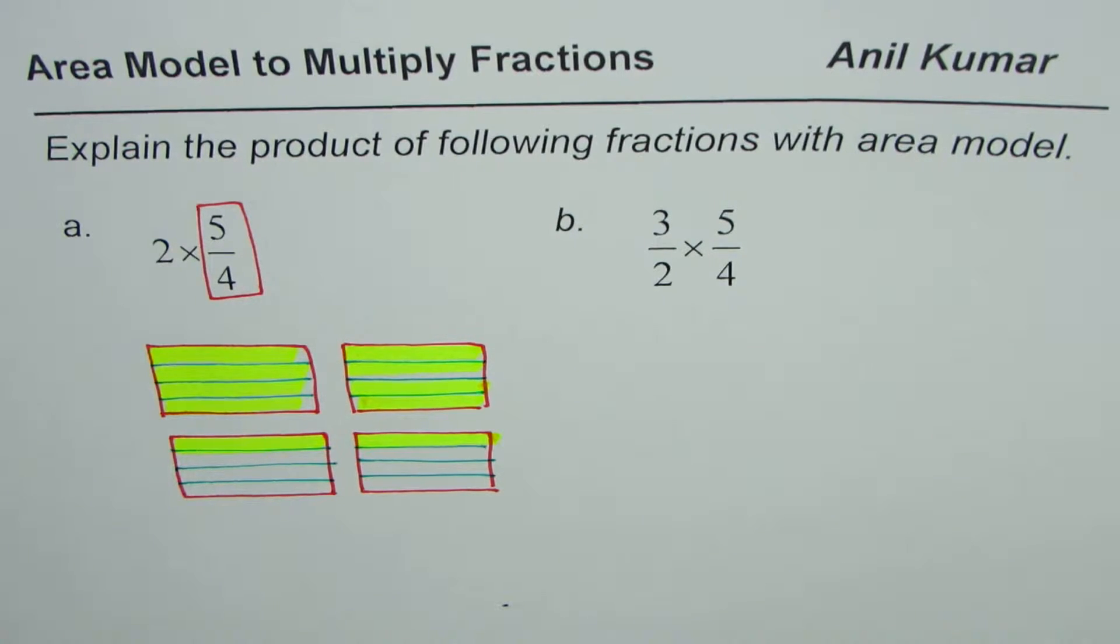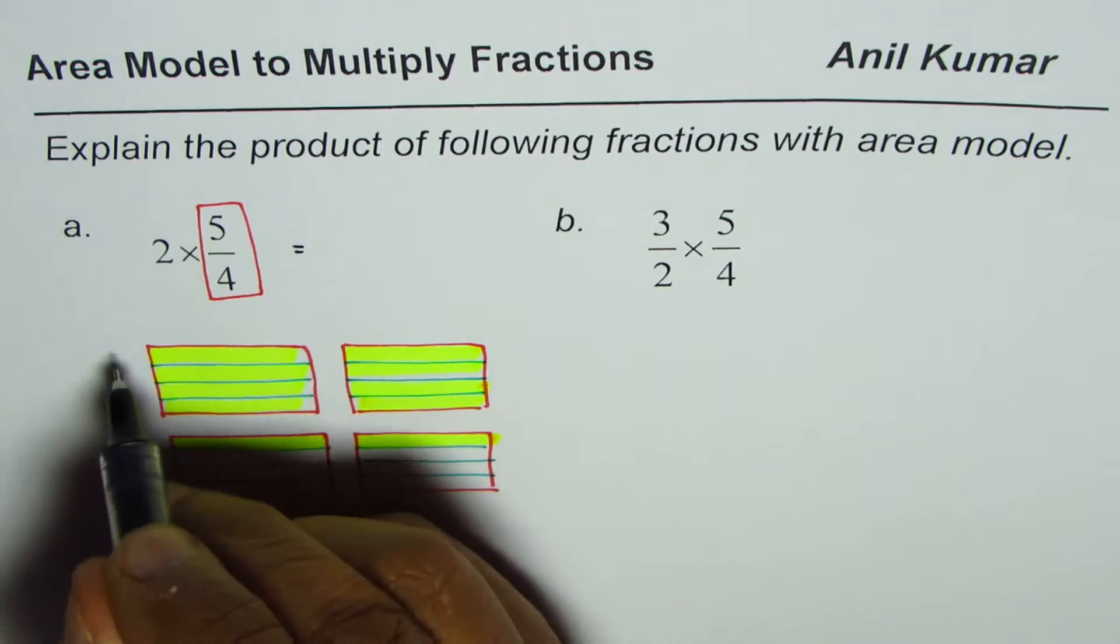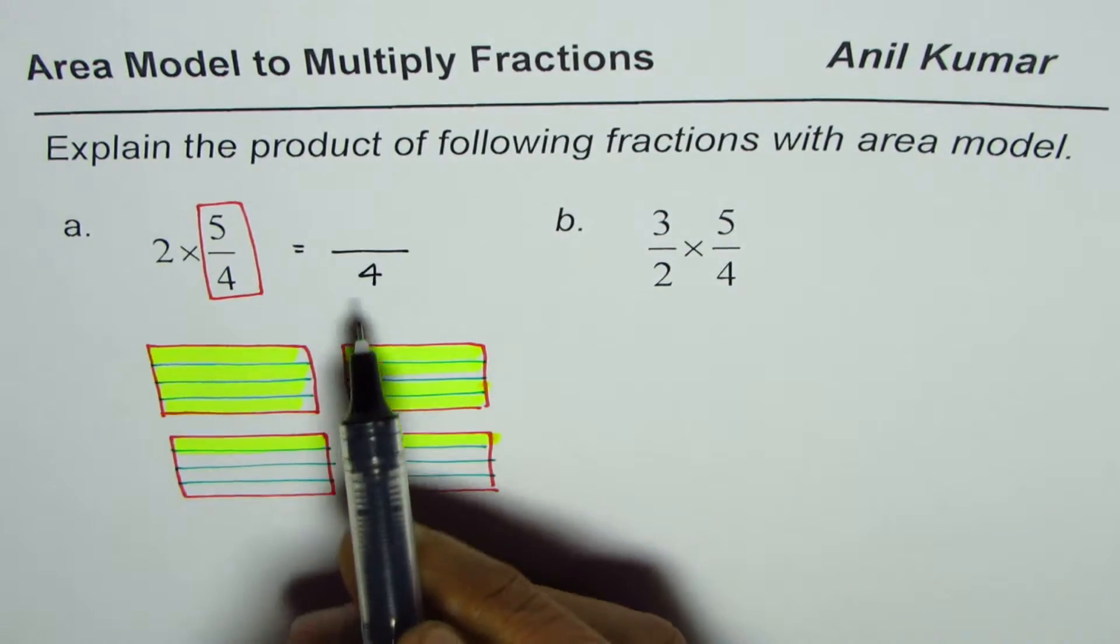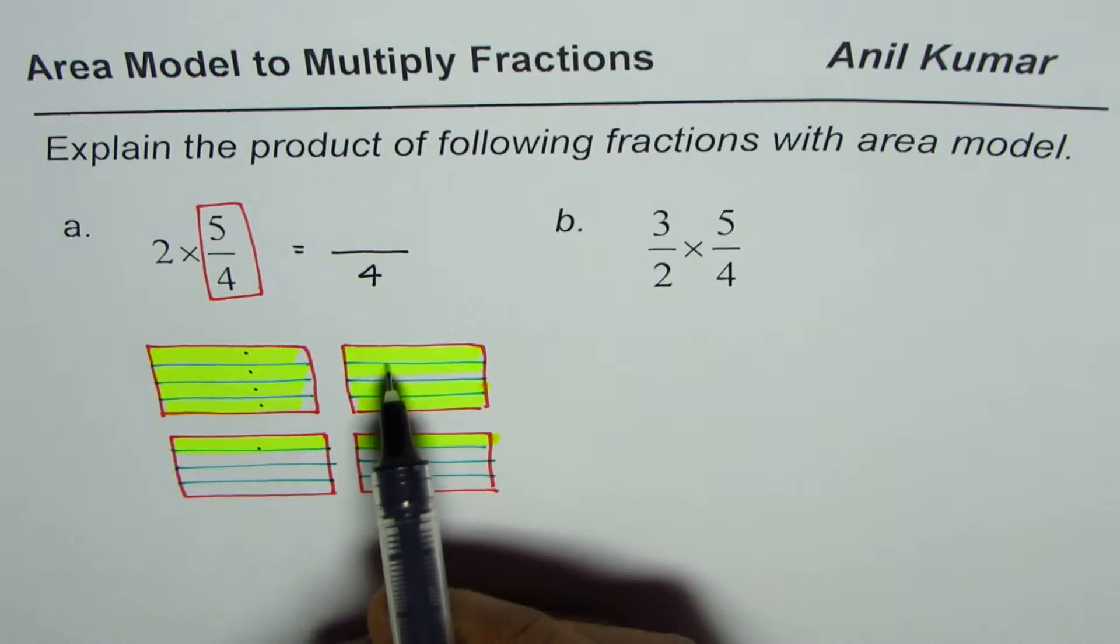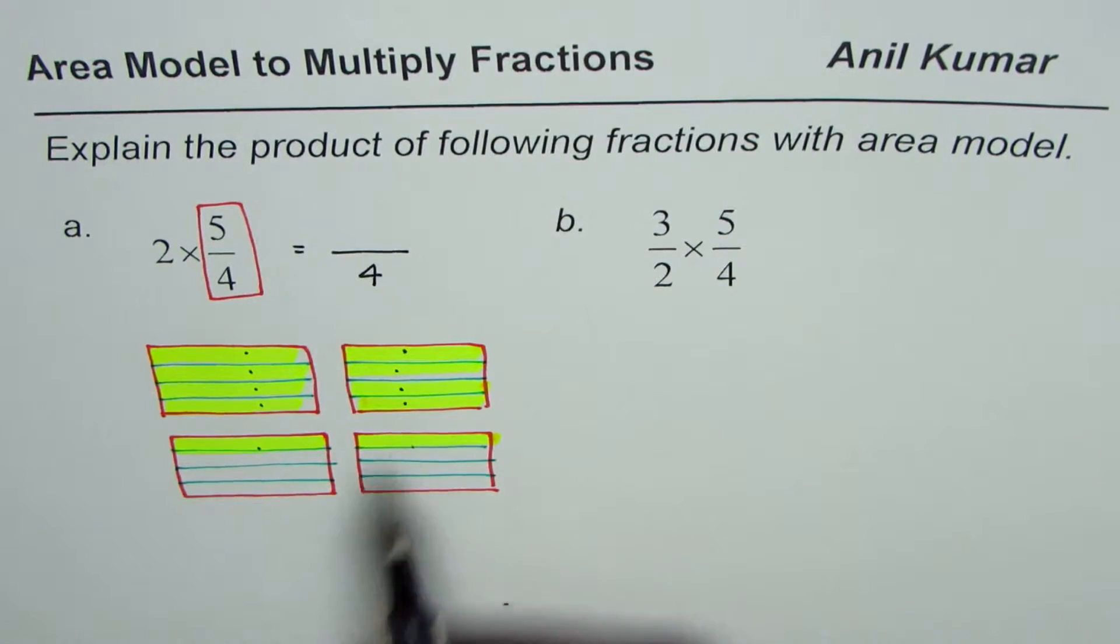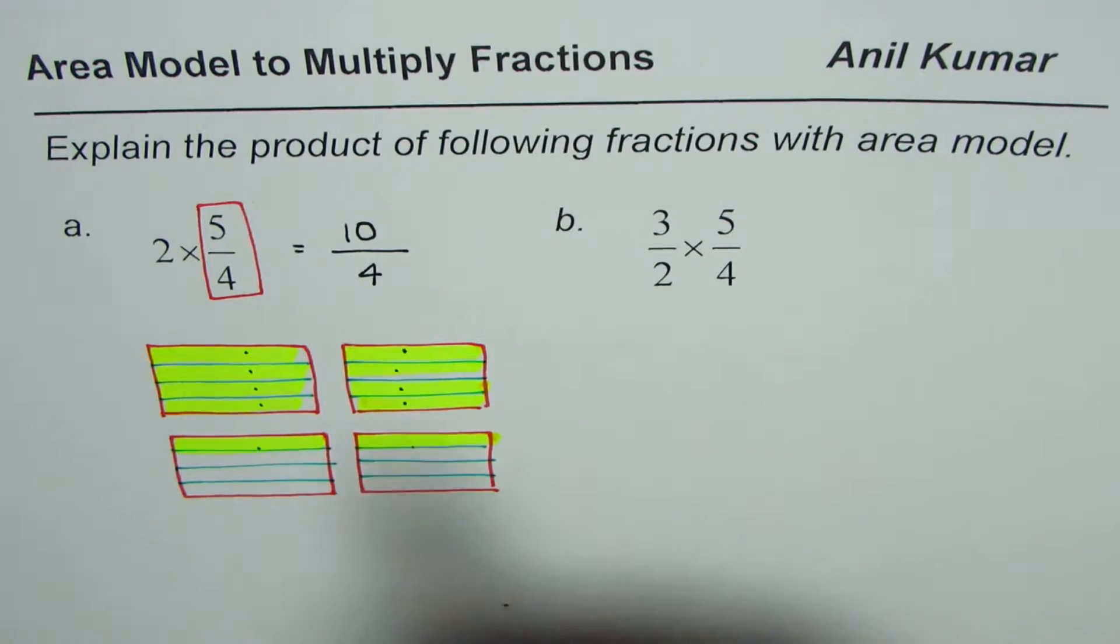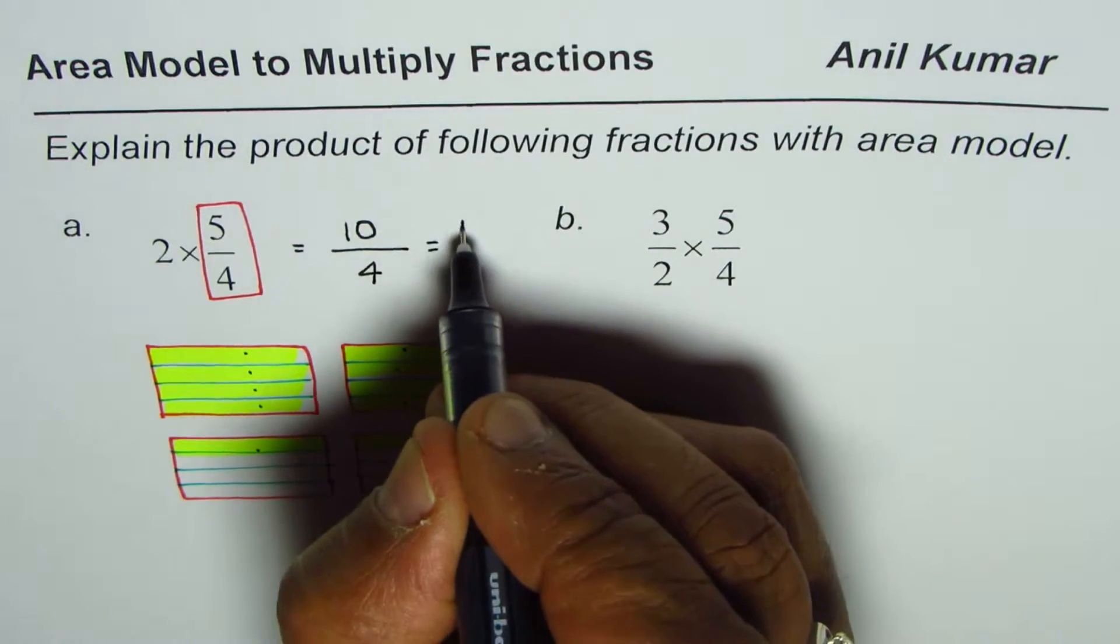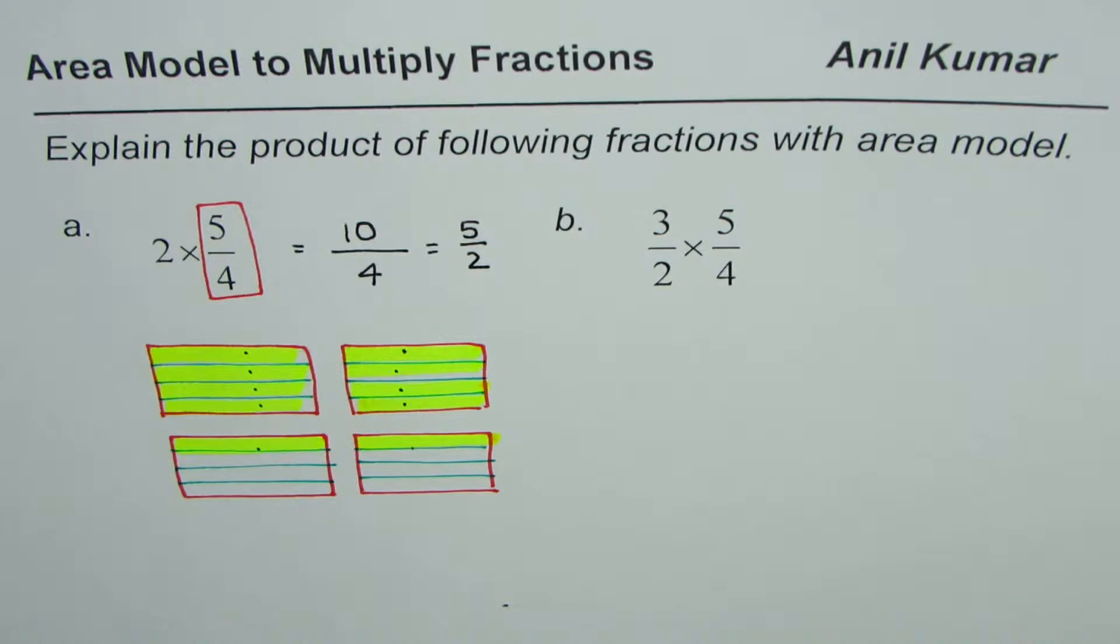How much is that? 2 times 5 over 4 is equal to—each rectangle is divided into fourths. And how many fourths do we have? 1, 2, 3, 4, 5, 6, 7, 8, 9, 10. So it is 10 over 4. You can actually simplify this. Dividing both by 2, you get 5 over 2. So it could be written as 5 over 2.